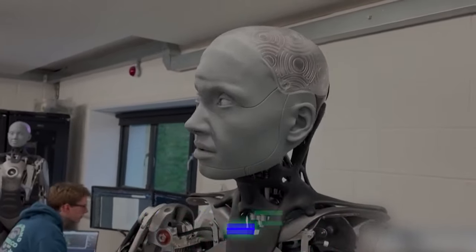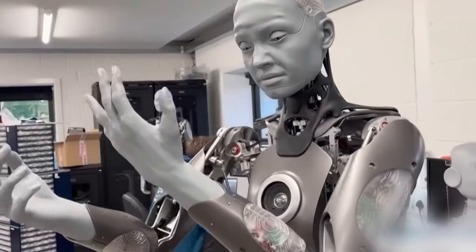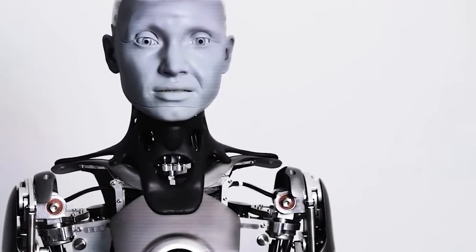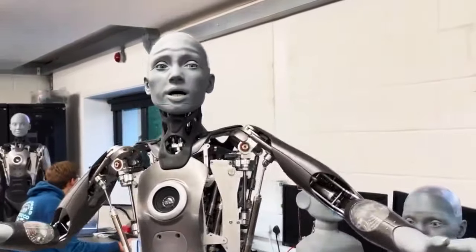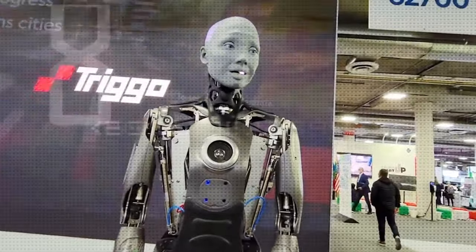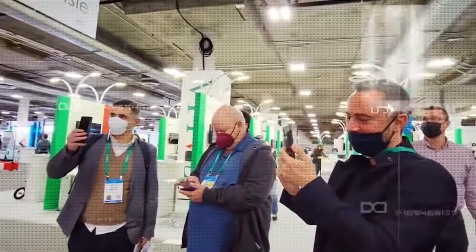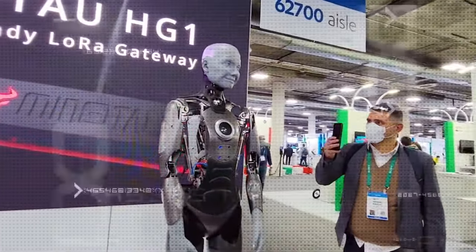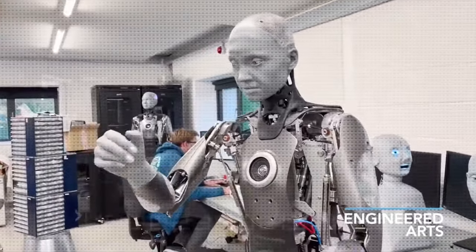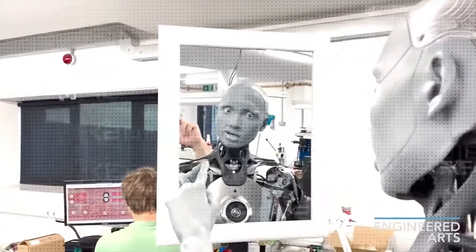Entertainment. With its lifelike features, Amica could be the next big star, featuring in movies, plays, or even concerts. And then of course research. Scientists could use Amica as an assistant, helping with experiments, data collection, or even as a subject to study human-robot interaction. In a nutshell, while Amica is still under development, its potential is vast. From being a friendly face at a store to potentially revolutionizing education, entertainment, and research, the future looks very promising. As Engineered Arts continues to innovate, one thing is very clear. Amica is not just a robot. It's a glimpse into a future where human-robot interactions might become an everyday norm.